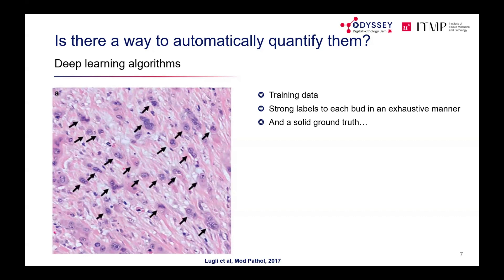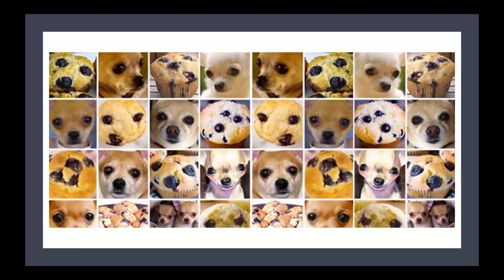The question arose whether buds could be automatically quantified, since manually counting is tedious. The challenge is the 'ground truth' problem — only highly trained pathologists can reliably identify buds. This is not a simple classification task like distinguishing a chihuahua from a muffin; it requires expert judgement.